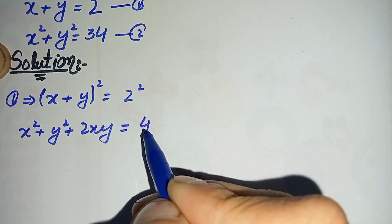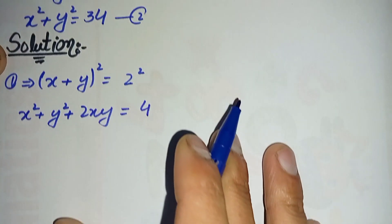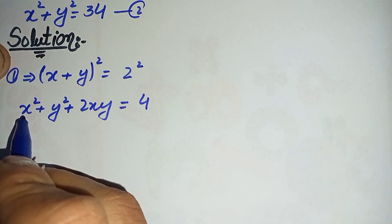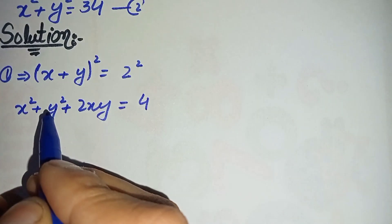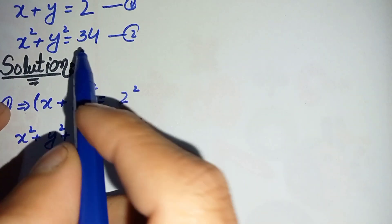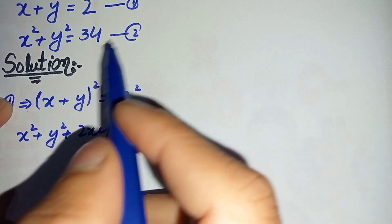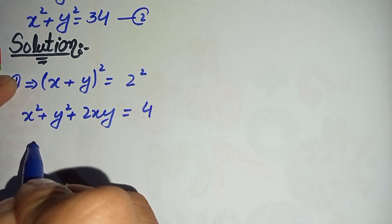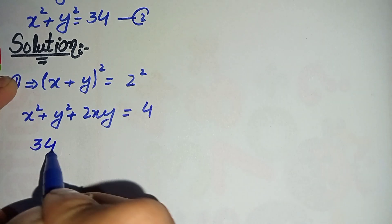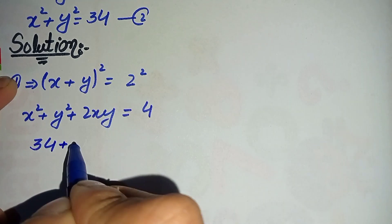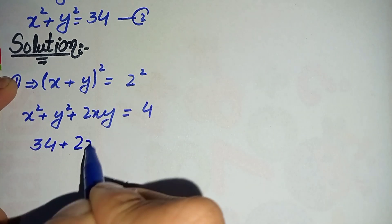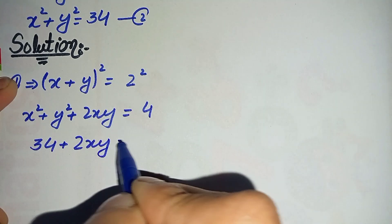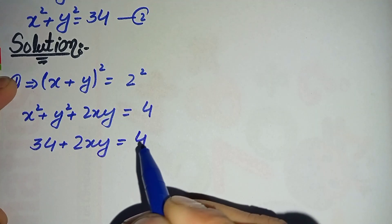So x squared plus y squared plus 2xy is equal to 2 squared, which is 4. Now we will replace x squared plus y squared with its value from equation number two, which is 34. So this becomes 34 plus 2xy is equal to 4.